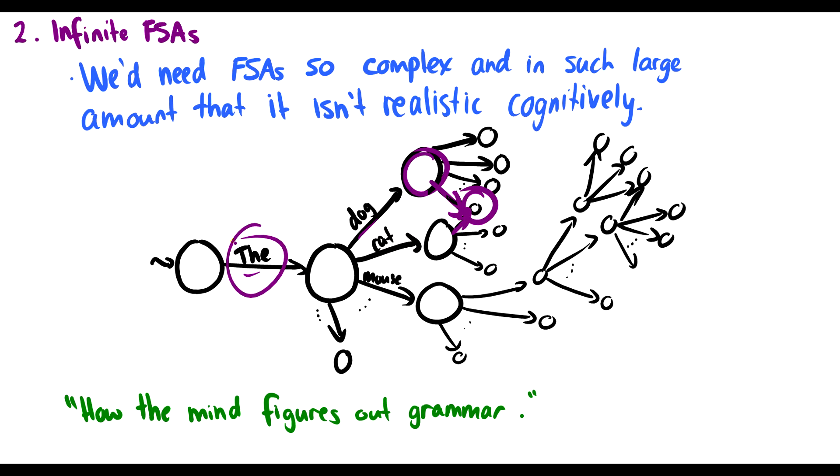The problem is this is just starting with the word the, and if we have a sentence that's a thousand words long, which is grammatically possible, the finite state machine is just going to be insane. If this picture screams that this is how the mind figures out grammar, that's crazy. It's not cognitively possible.